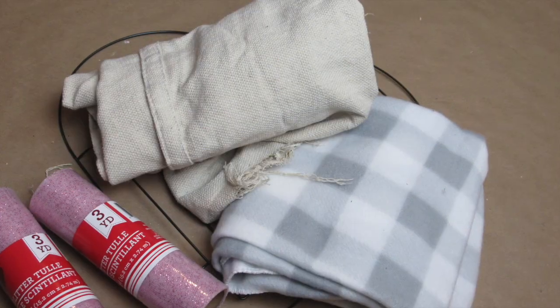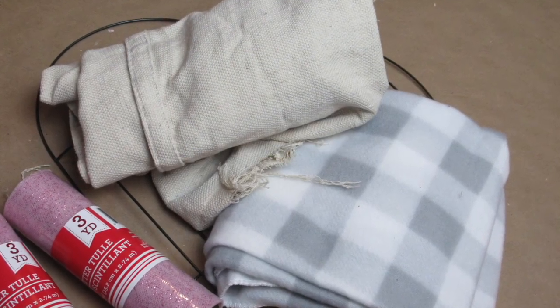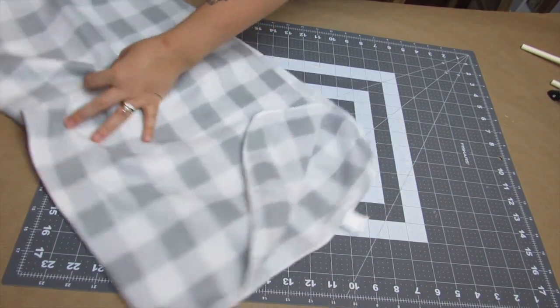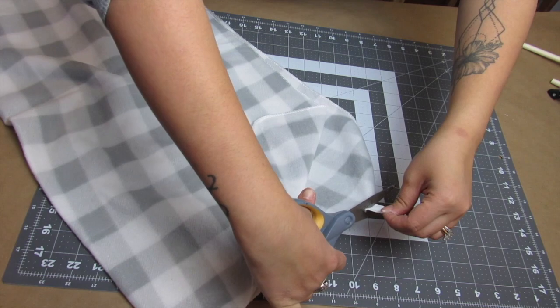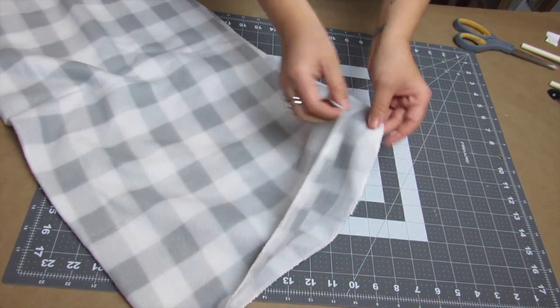You'll also need a fleece buffalo check blanket from Dollar Tree, and I used some scrap drop cloth for this. I decided to first work with the buffalo check blanket, cutting off the tags.